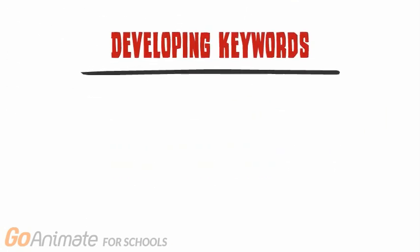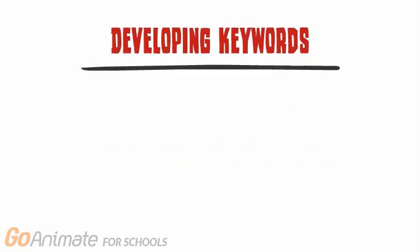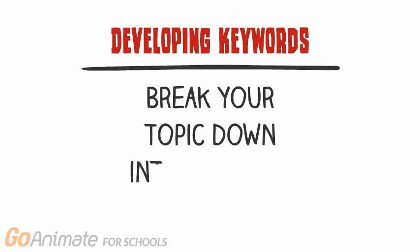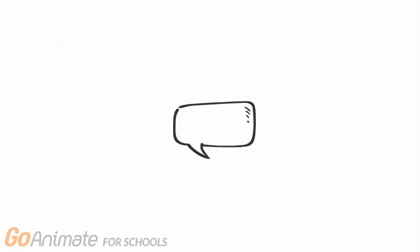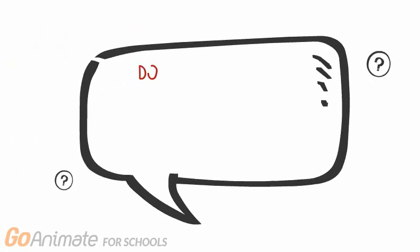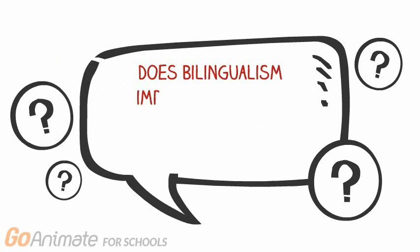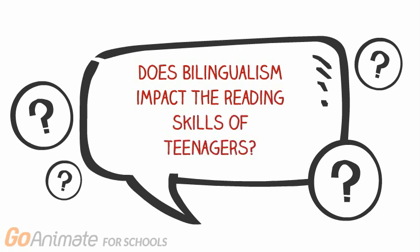To determine keywords, you usually begin by breaking your research question or topic down into its most basic parts. So let's say your research question is: does bilingualism impact the reading skills of teenagers?